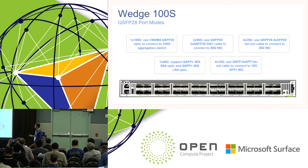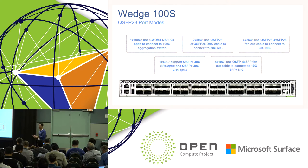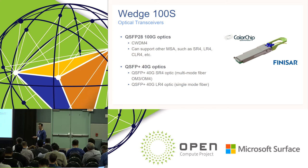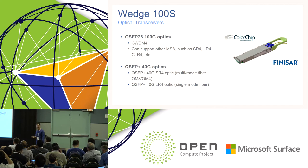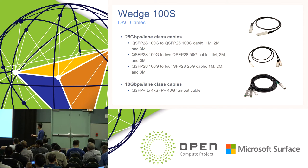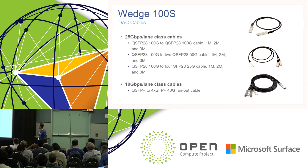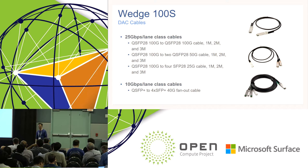Each QSFP28 port can have multiple modes supported by Broadcom Tomahawk: 100-gig, 2×50-gig, 4×25-gig, and backward compatible to 10-gig per lane modes like 40-gig or 4×10-gig. We tested Wedge 100 with CWDM4-OCP transceivers and also work with other MSA-compliant optics at 100-gig or 40-gig. From the top-of-rack switch to the servers below, we have direct-attached copper cables — 100-gig to 2×50-gig or 100-gig to 4×25-gig. The cable lengths tested are 1-meter, 2-meter, 3-meter with AWG28 or AWG30 wire gauge. The cable length is decided by the server location in the rack to achieve optimum cable management.